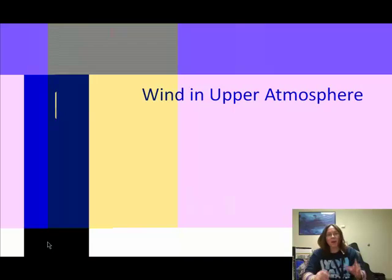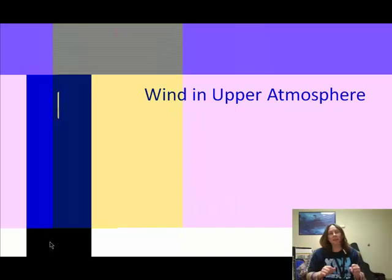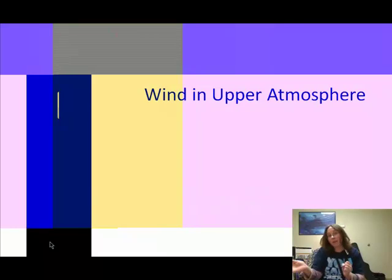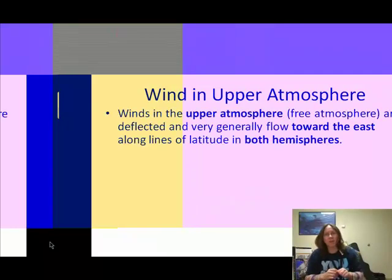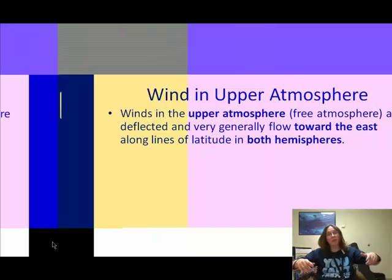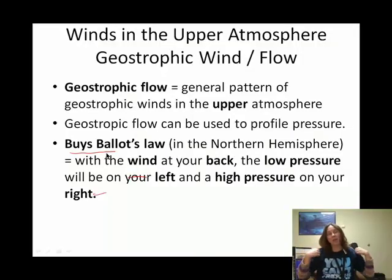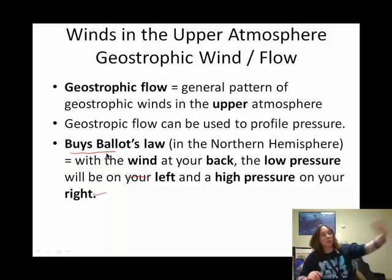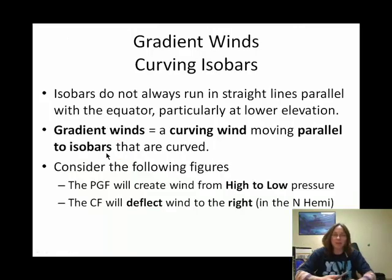According to Buys-Ballot's law, taking into account that the Coriolis force is deflection to the right in the northern hemisphere and to the left in the southern hemisphere: if you're in the northern hemisphere and you have the wind at your back, put out your left hand and you'll be pointing to the low pressure. Put out your right hand and you'll be pointing to the high pressure. It's L and L — left hand, low pressure. That's Buys-Ballot's law.